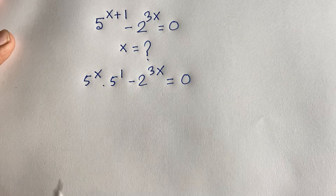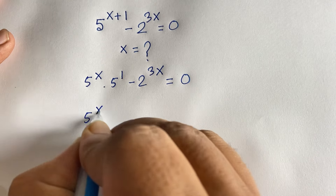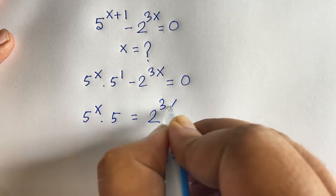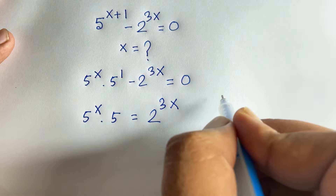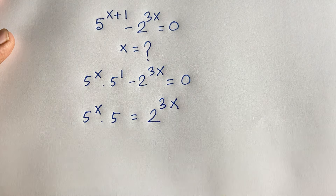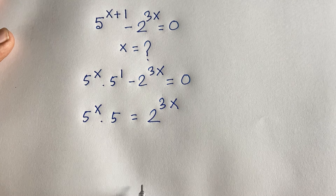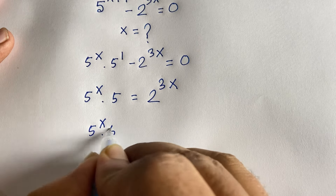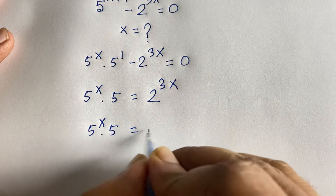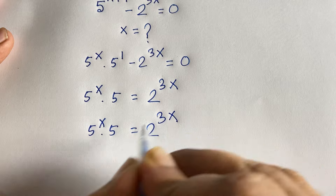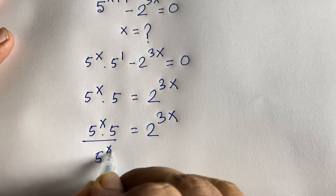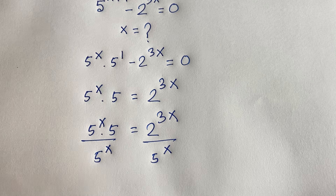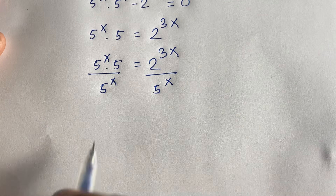Now I move this expression to the other side, so it will be positive on one side and we get 2 to the power x times 2 is equal to 2 to the power 3x. I divide both sides by 2 to the power x.